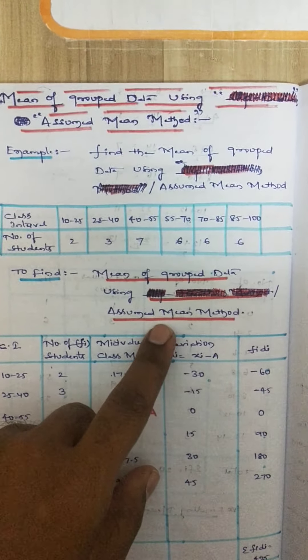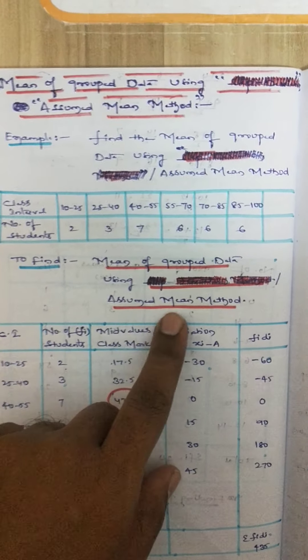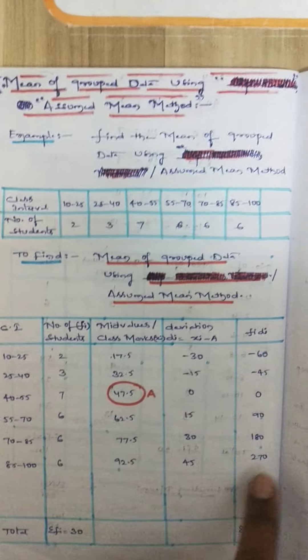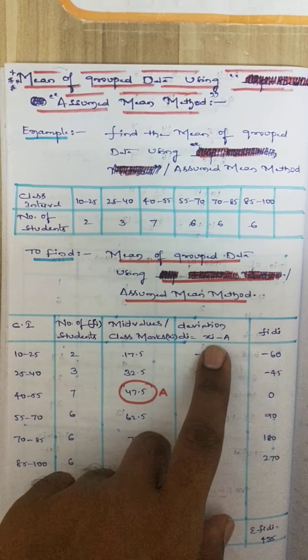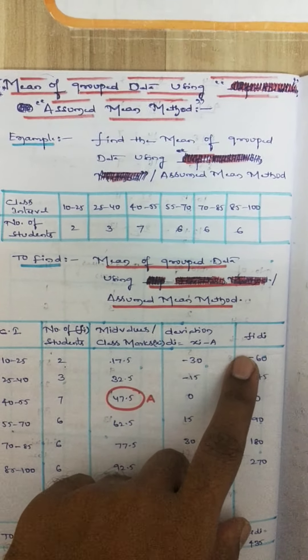For solving this mean of grouped data using assumed method, we need to take three more columns: mid values, deviation, and FiDi.